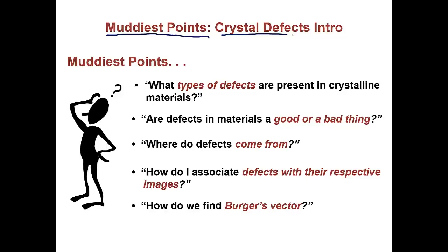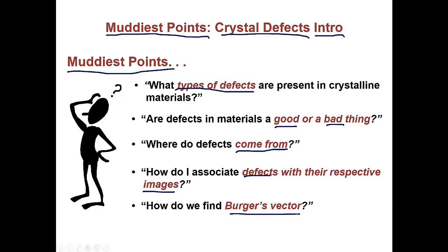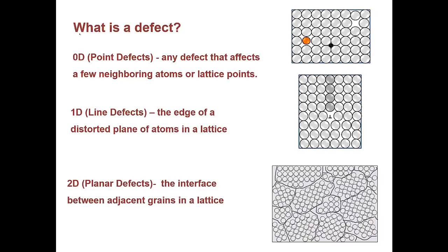Hello, and welcome to another Muddiest Points video. In this video, we'll be going over crystal defects — this is going to be an introduction video. Below, we have some muddiest points, which are questions based off of responses students have given in class. First up: what types of defects are present in crystalline materials? Are defects a good or bad thing? Where do defects come from? How do you associate defects with their respective images? And how do we find Burgers vector? Hopefully by the end of this video, you'll be able to answer all of these questions.